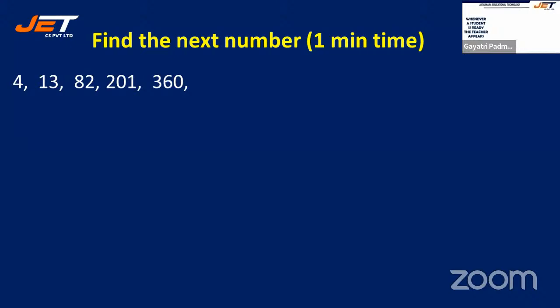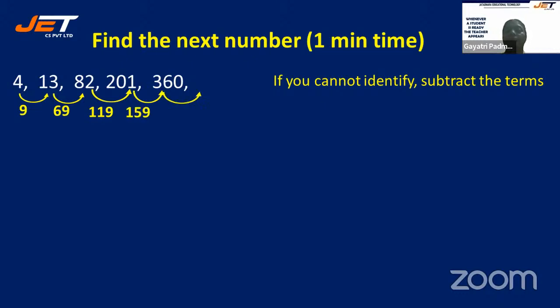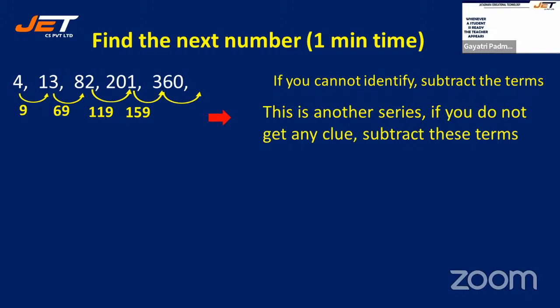Let us try another one: 4, 13, 82, 201, 360. If you cannot identify, subtract the terms: 13−4=9, 82−13=69, 201−82=119, 360−201=159. This is another series. Subtract again: 69−9=60, 119−69=50, 159−119=40.